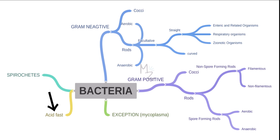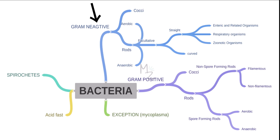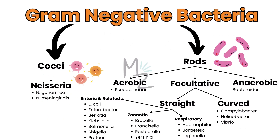There's an exception — the Mycoplasma bacterium. On the basis of gram staining, bacteria are further classified into gram-positive and gram-negative. Gram-negative bacteria are subdivided into cocci, like Neisseria gonorrhoeae and Neisseria meningitidis, and rods.